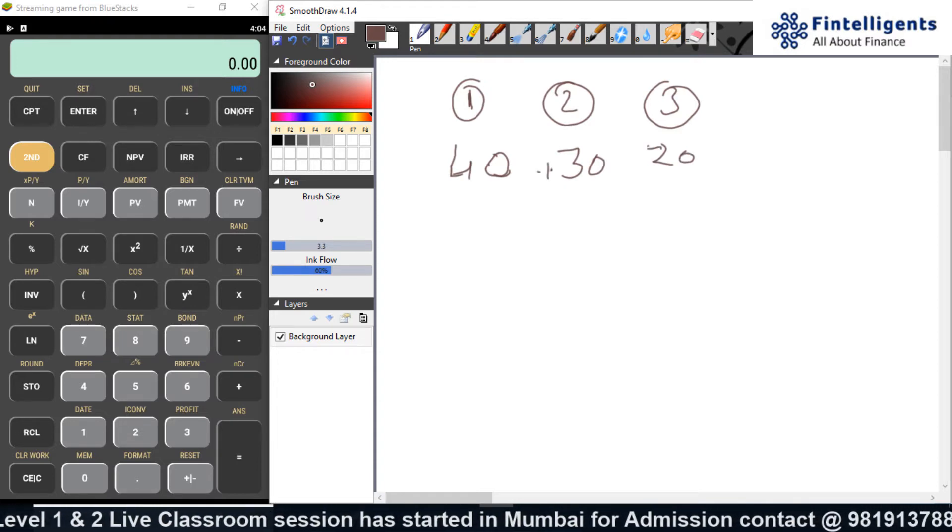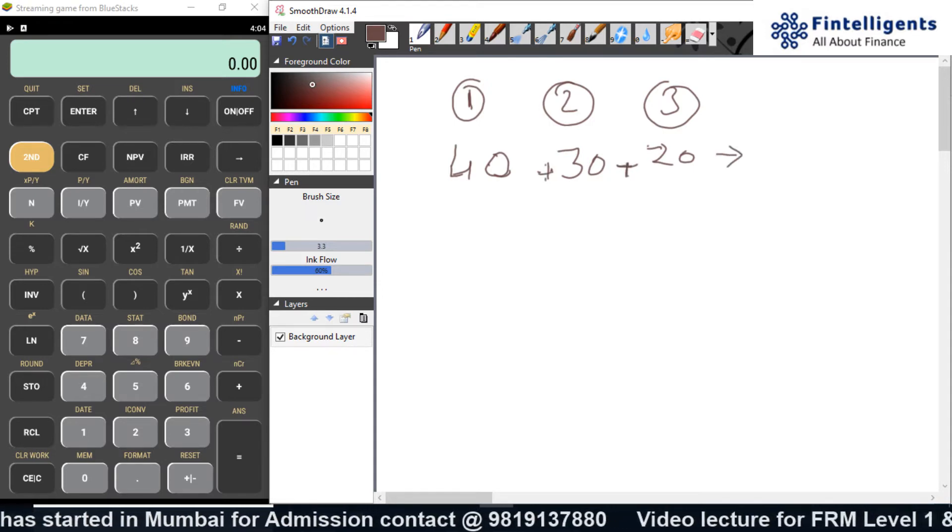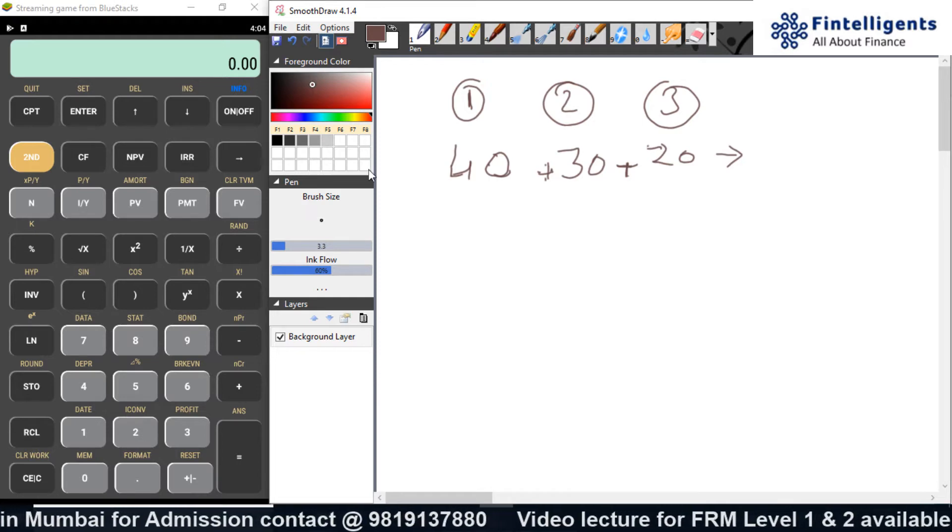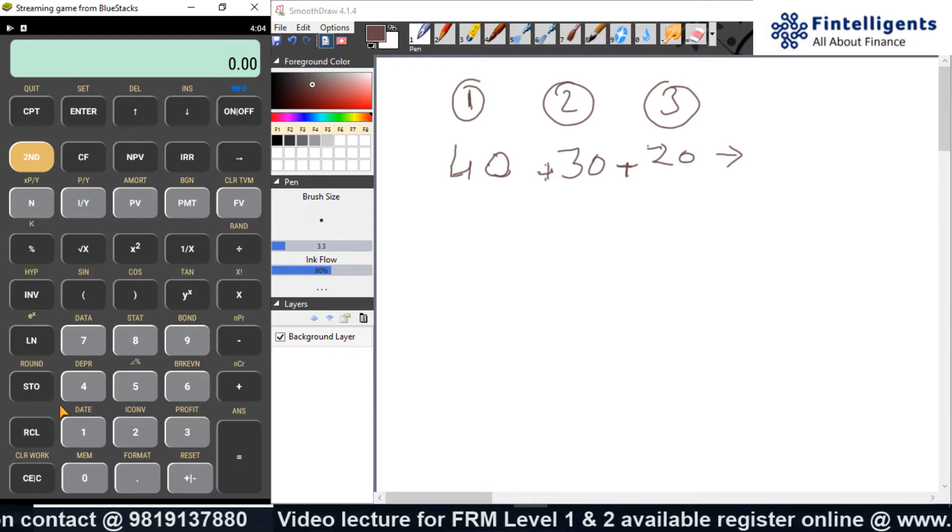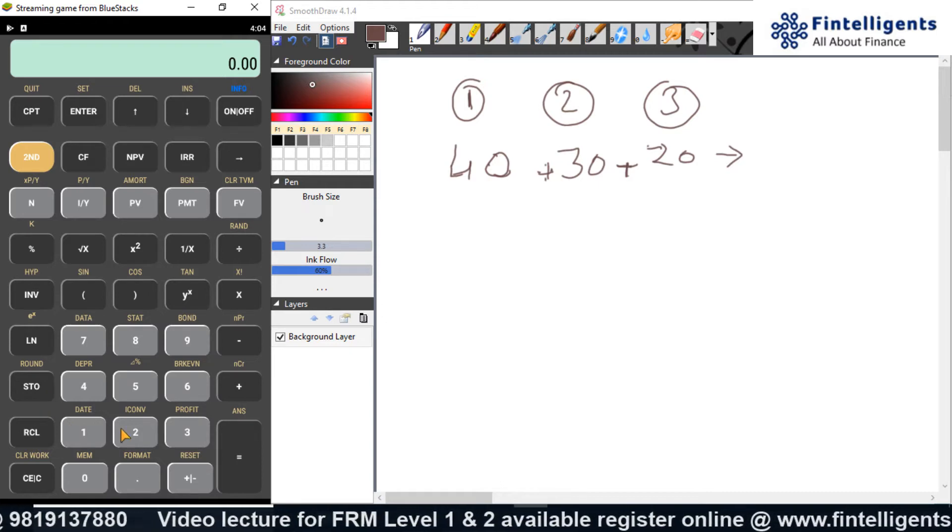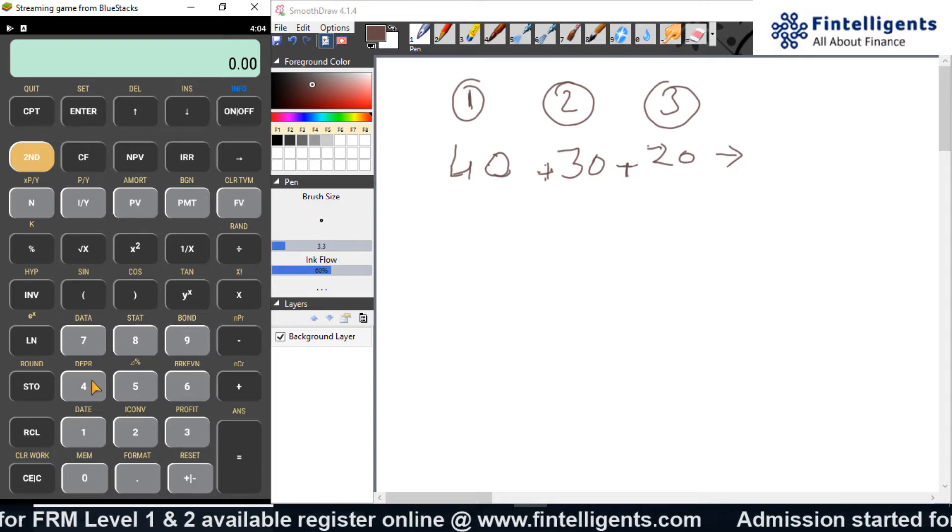The second outcome answer is 30 and third outcome answer is 20. You are supposed to add all of them and get your final answer. So, how do we quickly do it? The traditional method that we can use is the storage function for each button. Now, how do I do it? I will first show the storage, your traditional function